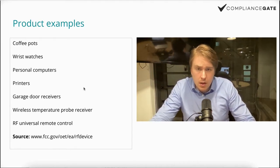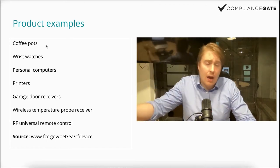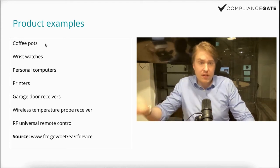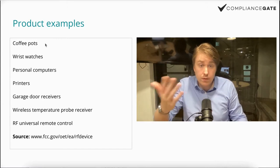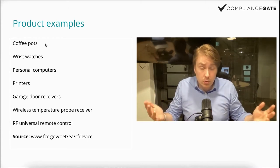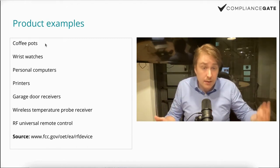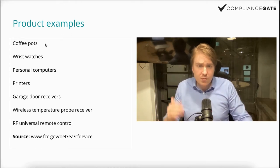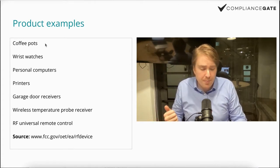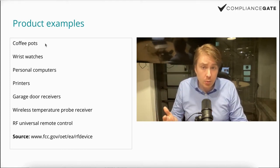You can find the exact same list if you follow the URL on screen. A lot of kitchen appliances these days have Bluetooth or other wireless communication modules, so you wouldn't be able to claim that a coffee pot or espresso machine you can control via Bluetooth or Wi-Fi is an unintentional radiator — that should be an intentional radiator, which we have another video on. Don't see this list as definitive, especially in the world of IoT. It's better to look at the definition and understand it from a more technical perspective.